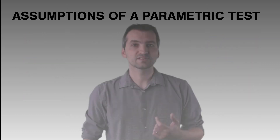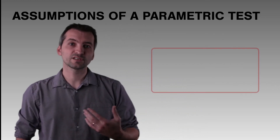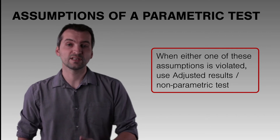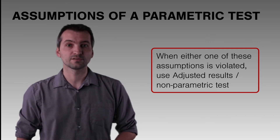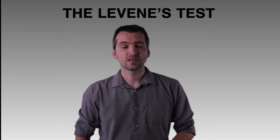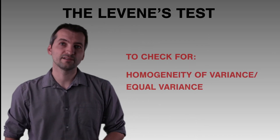If any one of these assumptions is violated, we'll need to adjust our results or use a non-parametric test that doesn't carry those same assumptions. To check whether assumptions have been met, we can use SPSS. The first SPSS test we introduce is Levene's test, which assesses the homogeneity of variance assumption.